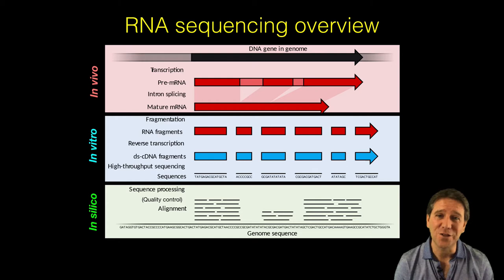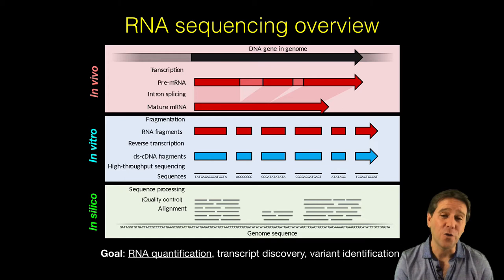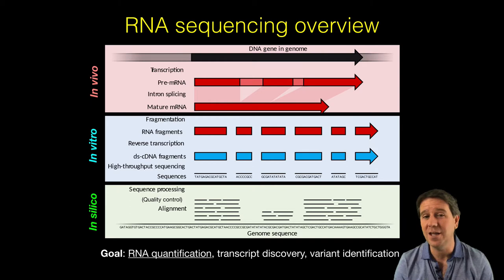From the sequencer output we can start our in silico steps where we go through quality control, then alignment or mapping of those reads to a reference genome sequence. The overall goal of this procedure is most commonly RNA quantification, but also novel transcript discovery and variant identification.